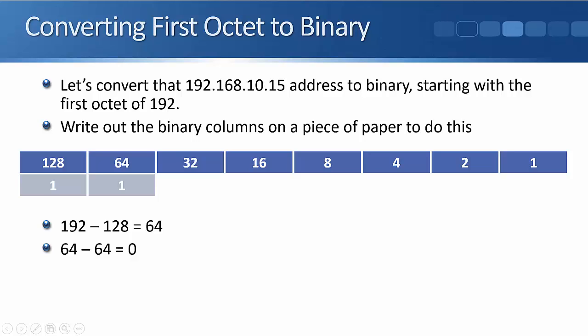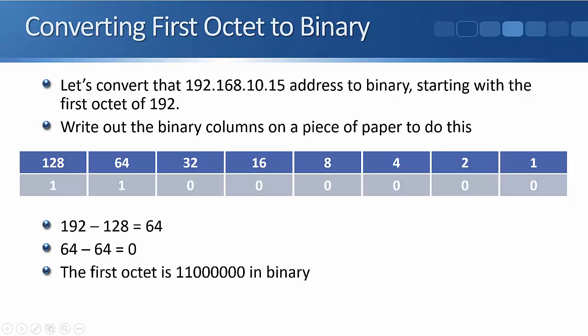Then does 32 go into 0? Obviously not, so we put a 0 there. It's pretty obvious we've got 0 left, so we're gonna have 0 on all of the rest of the columns. So 192, if we write that in binary, it is 11000000.